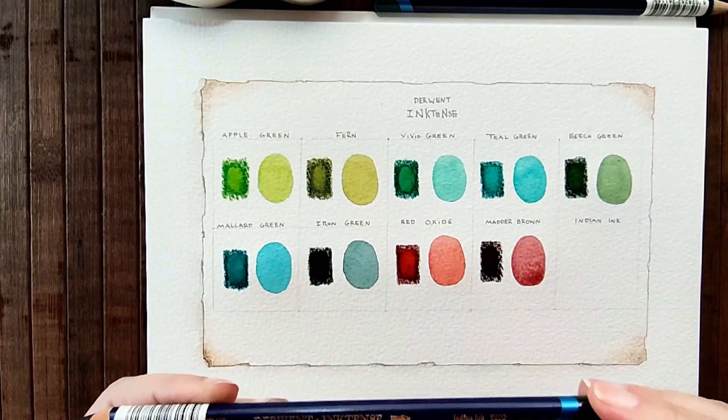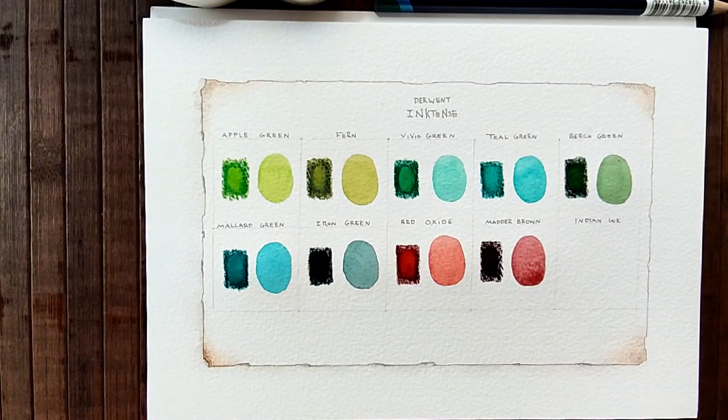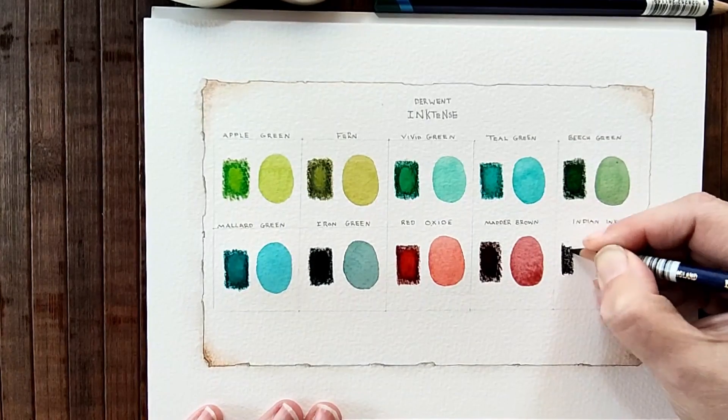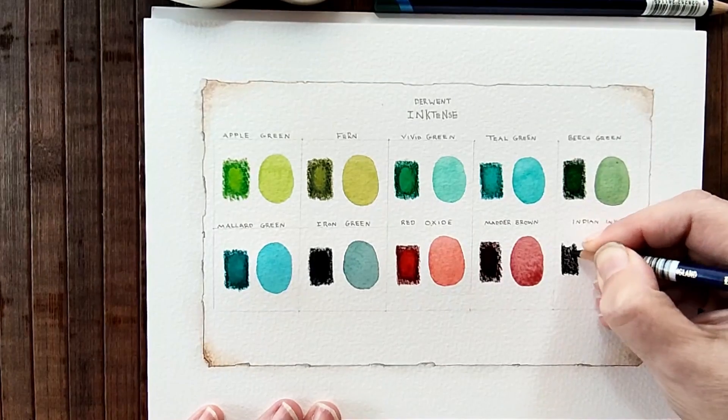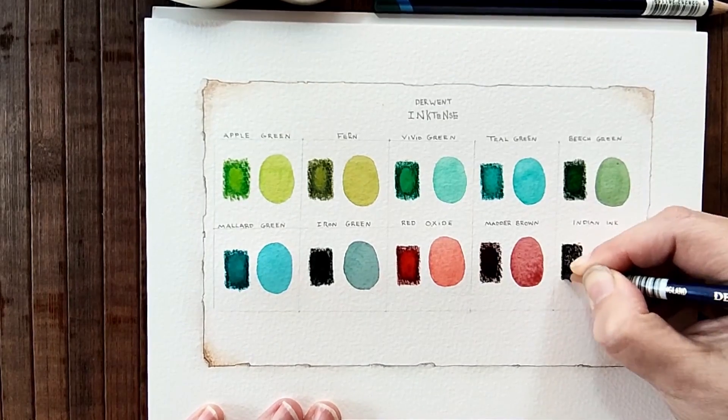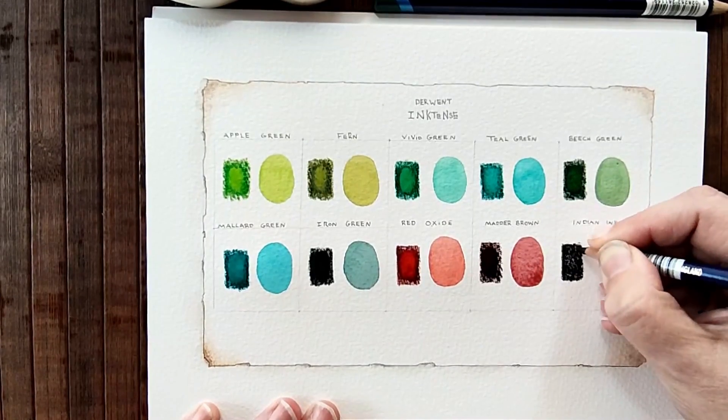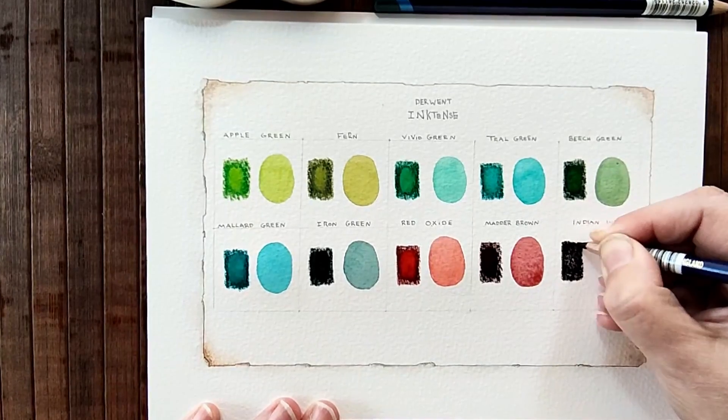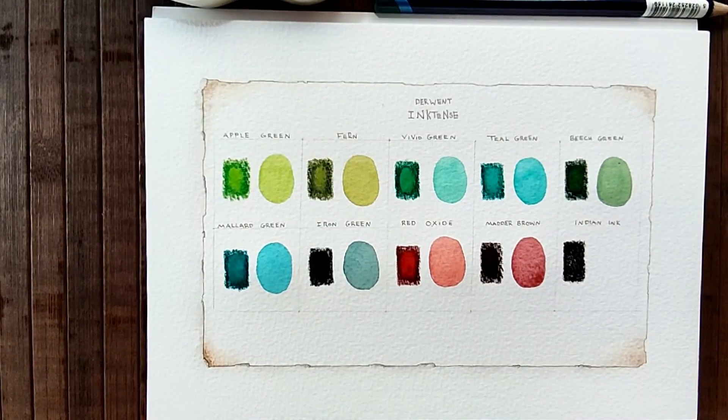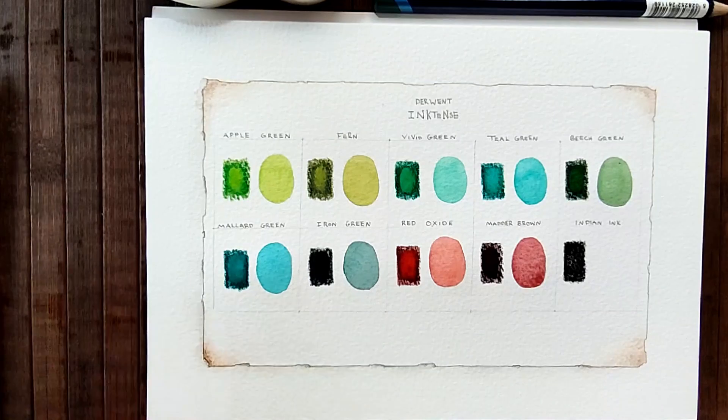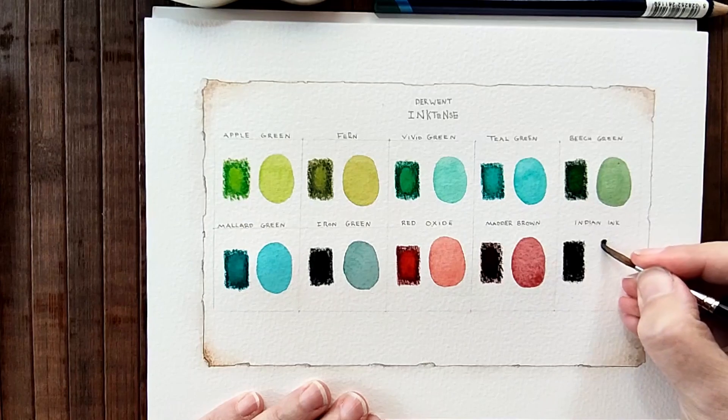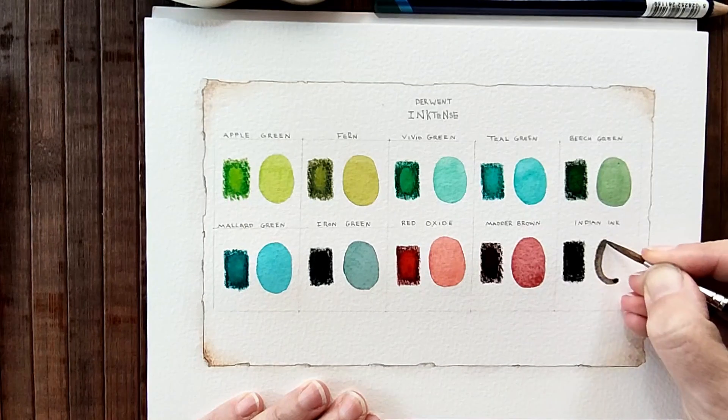And next, the last one, is this Indian ink. Which is very coal-like. Let's see how dark that is then. Oh, that's nice. That's like a warm black.